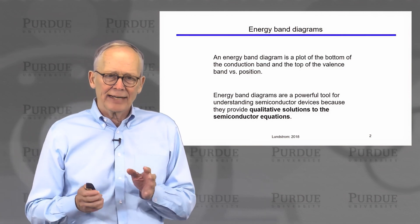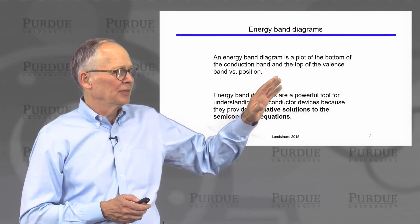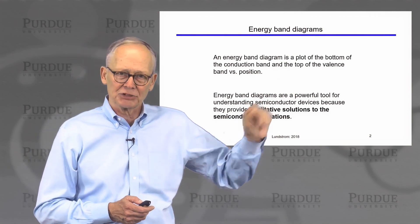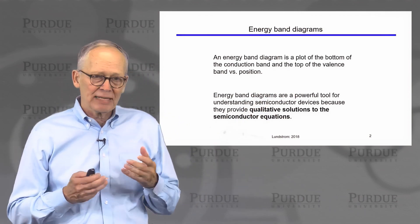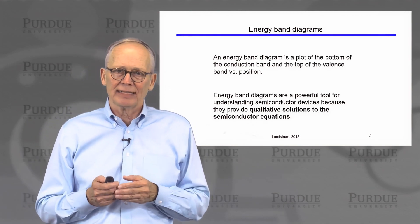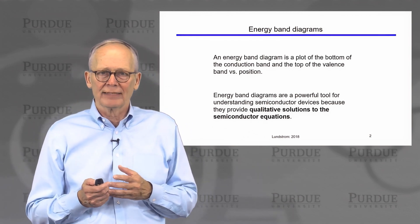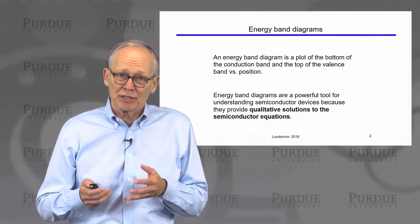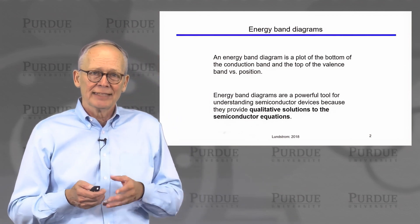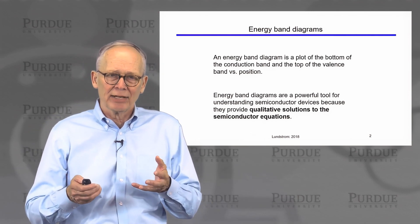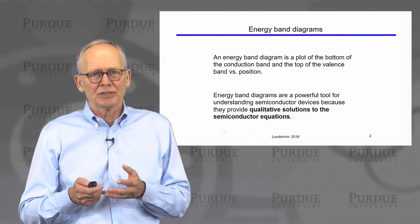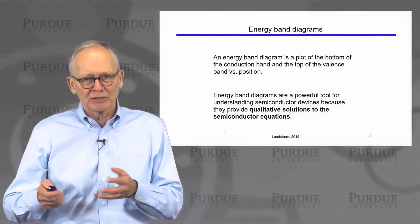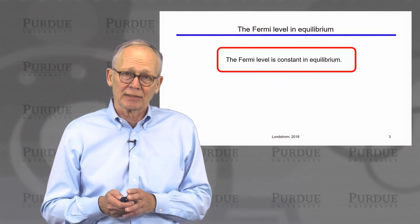An energy band diagram, just to remind you, is a plot of the bottom of the conduction band and the top of the valence band versus position. Energy band diagrams are a very powerful technique for developing a qualitative understanding of the solution of a set of semiconductor equations. Usually the first step in understanding a device is to draw an energy band diagram, and if we can understand the operation in terms of energy band diagrams, then we're prepared to write down a few equations and solve them to get analytical expressions.